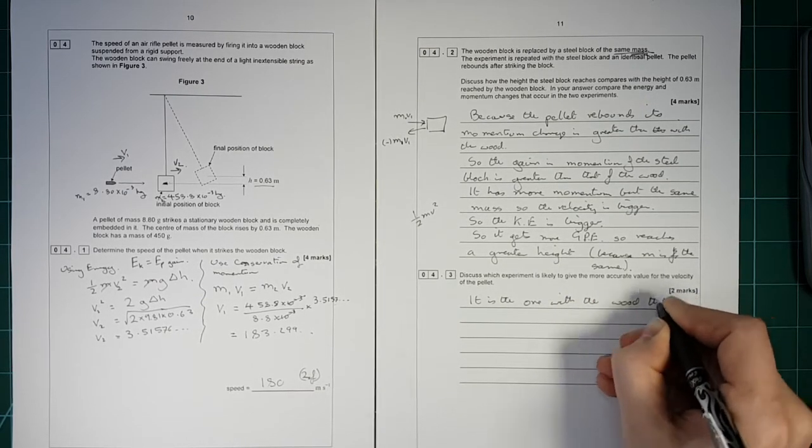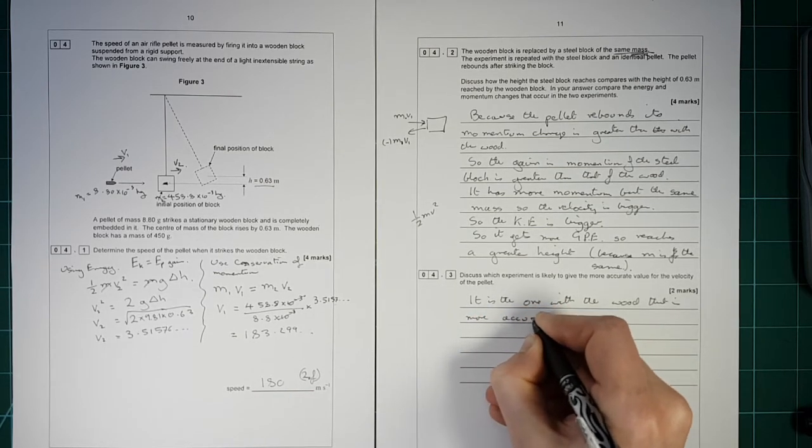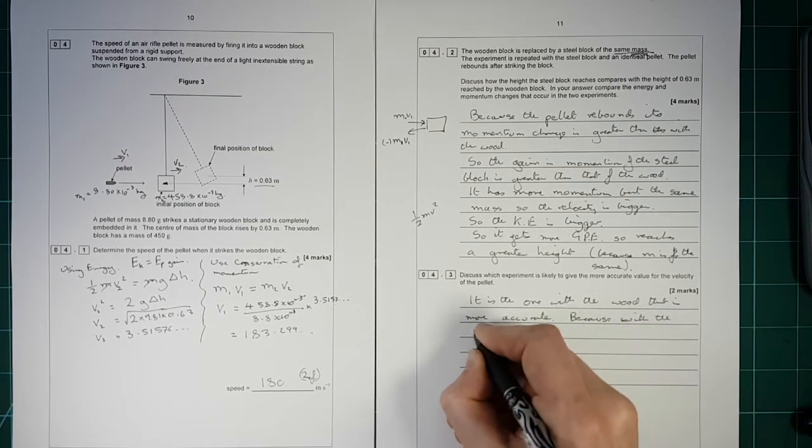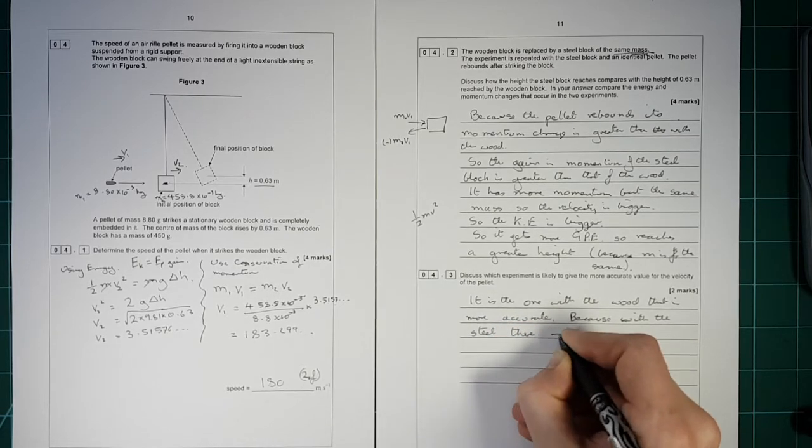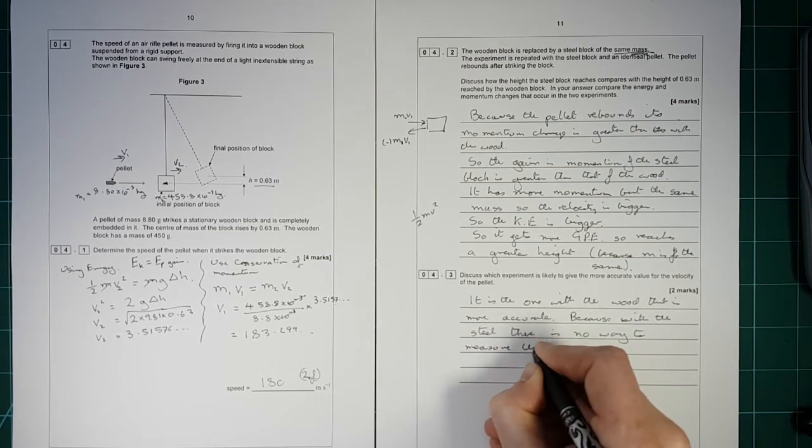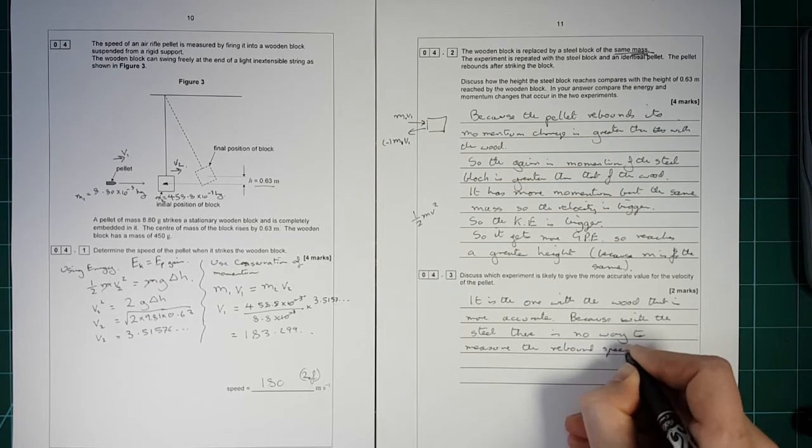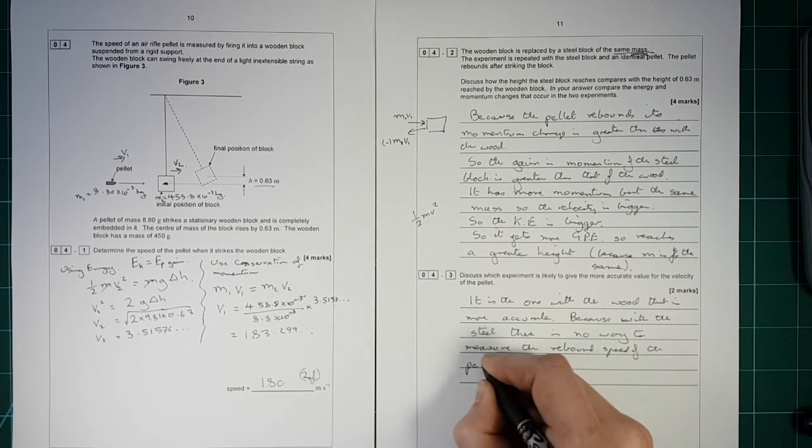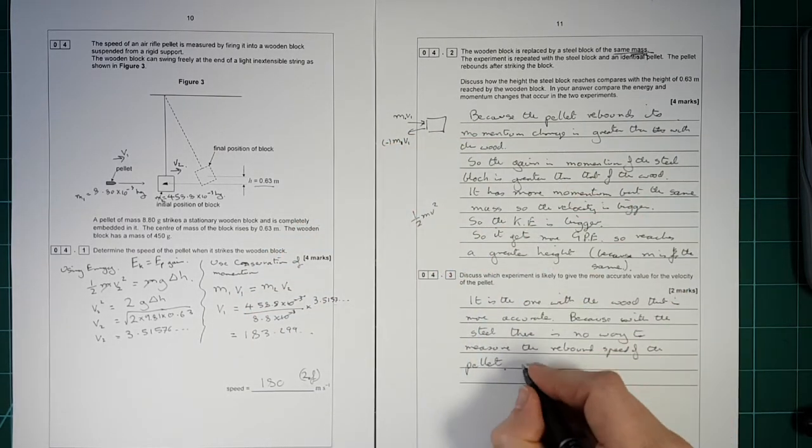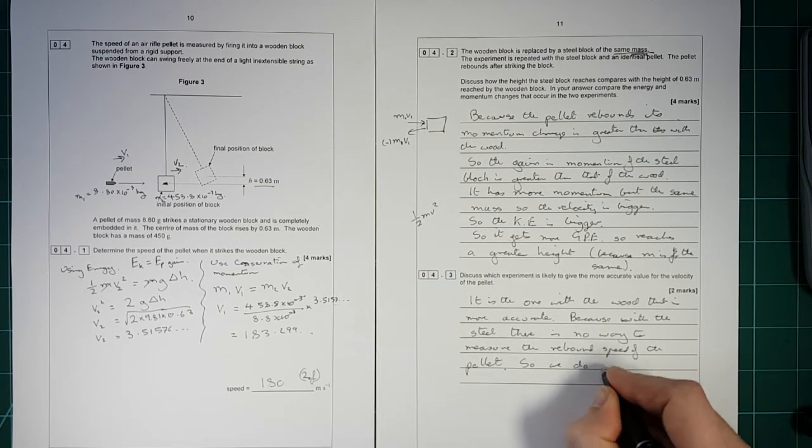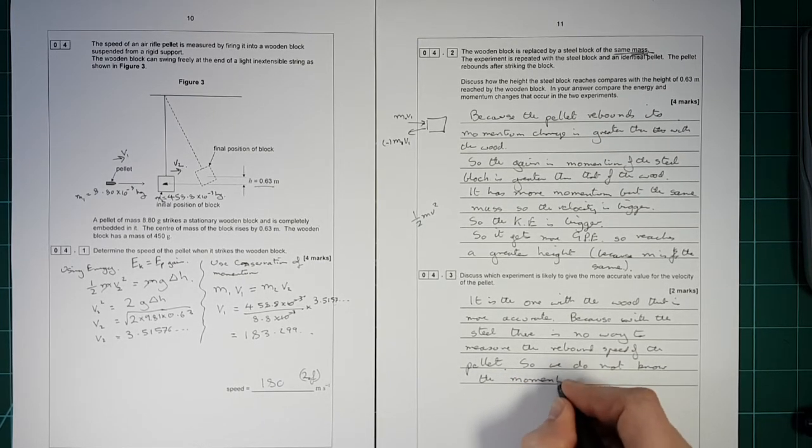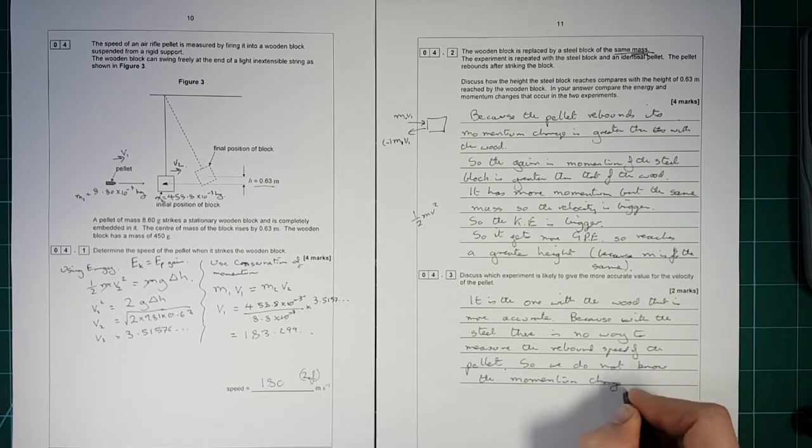So it is the one with the wood that is more accurate, because with the steel there is no way to measure the rebound speed of the pellet. So we don't know this, so we don't know the momentum change. So we do not know the momentum change.